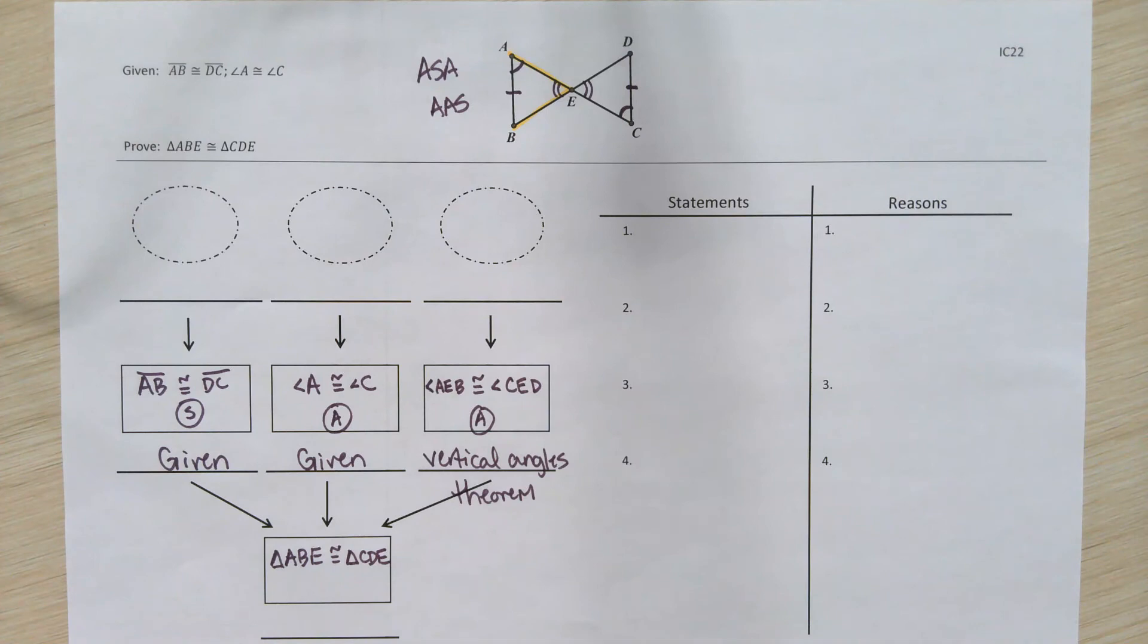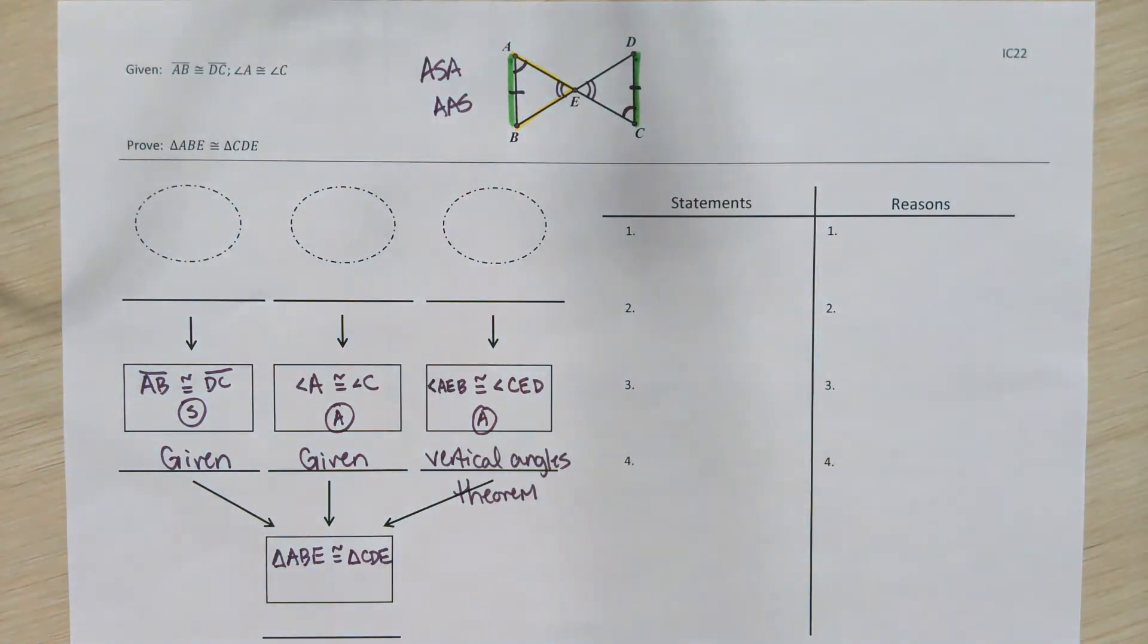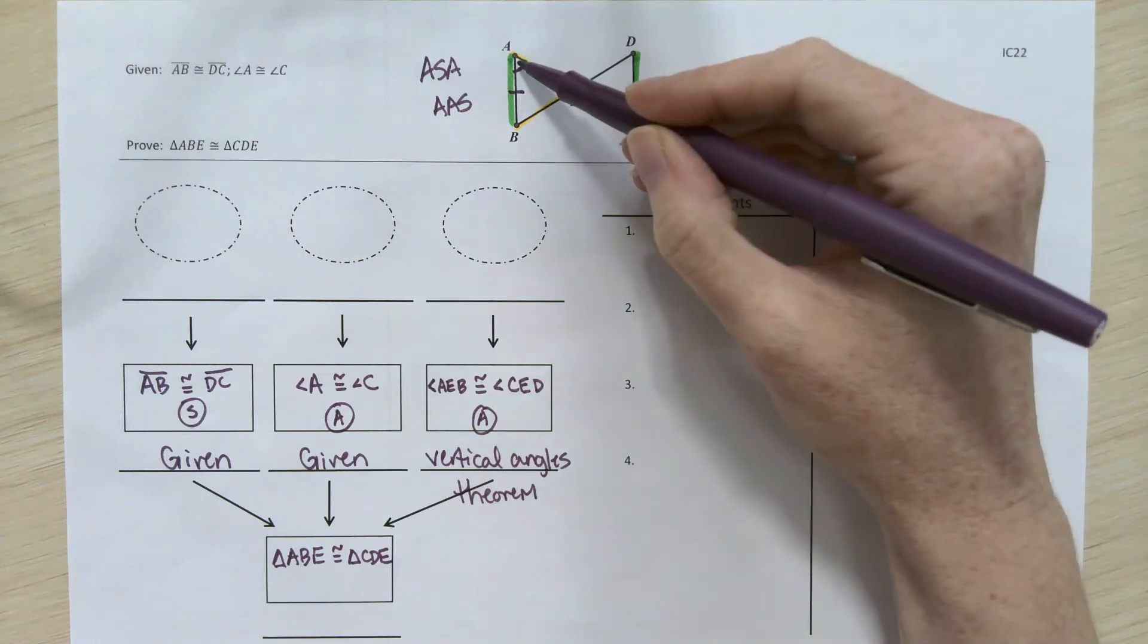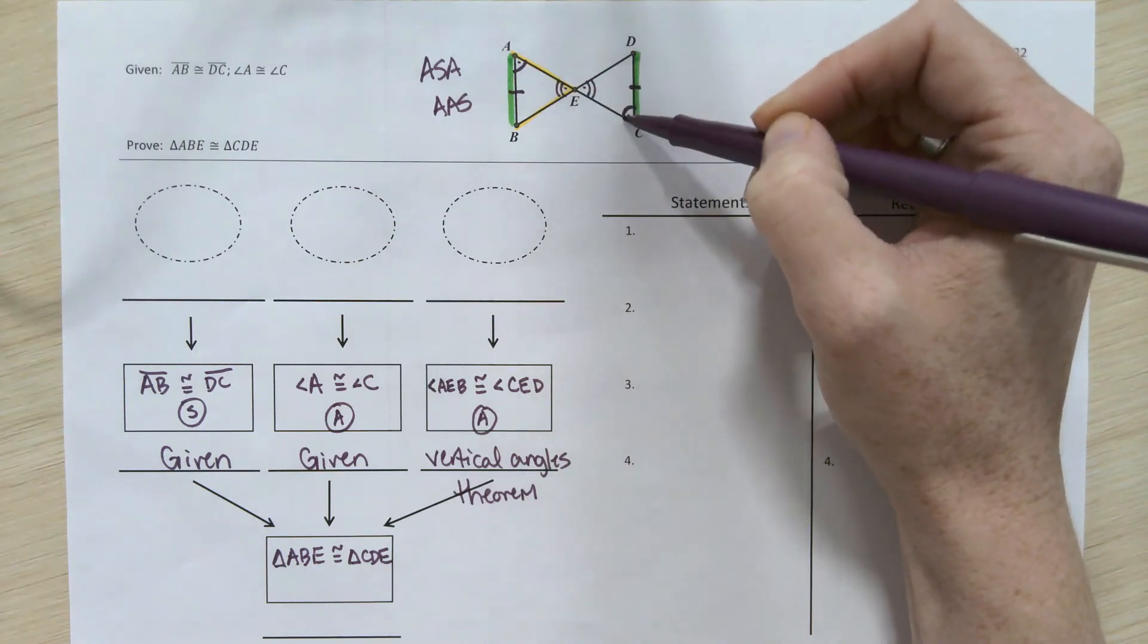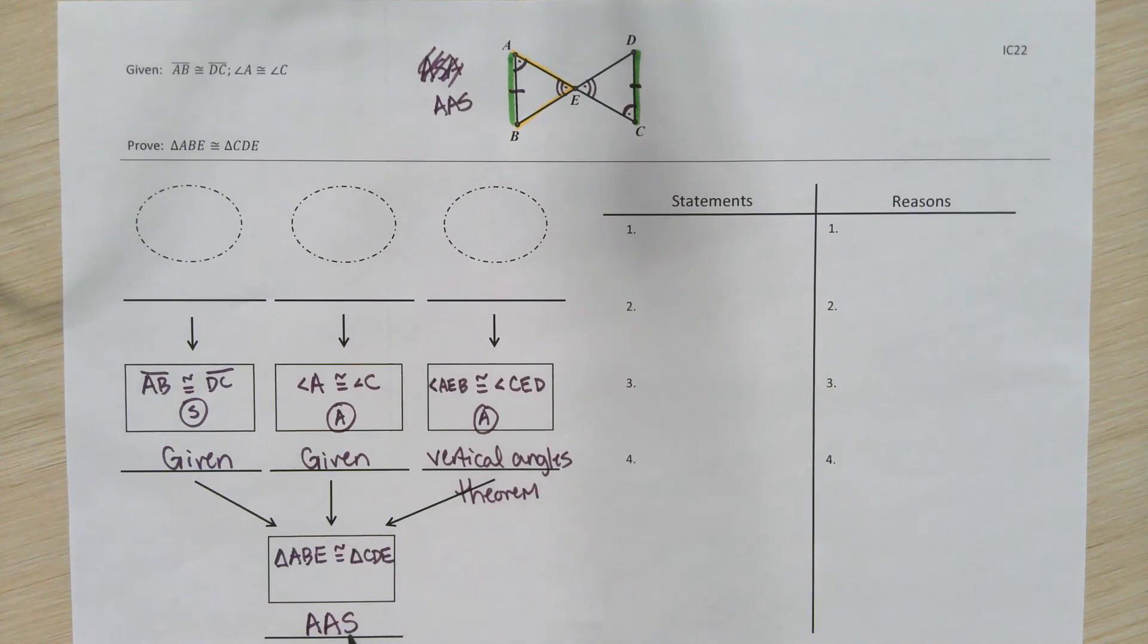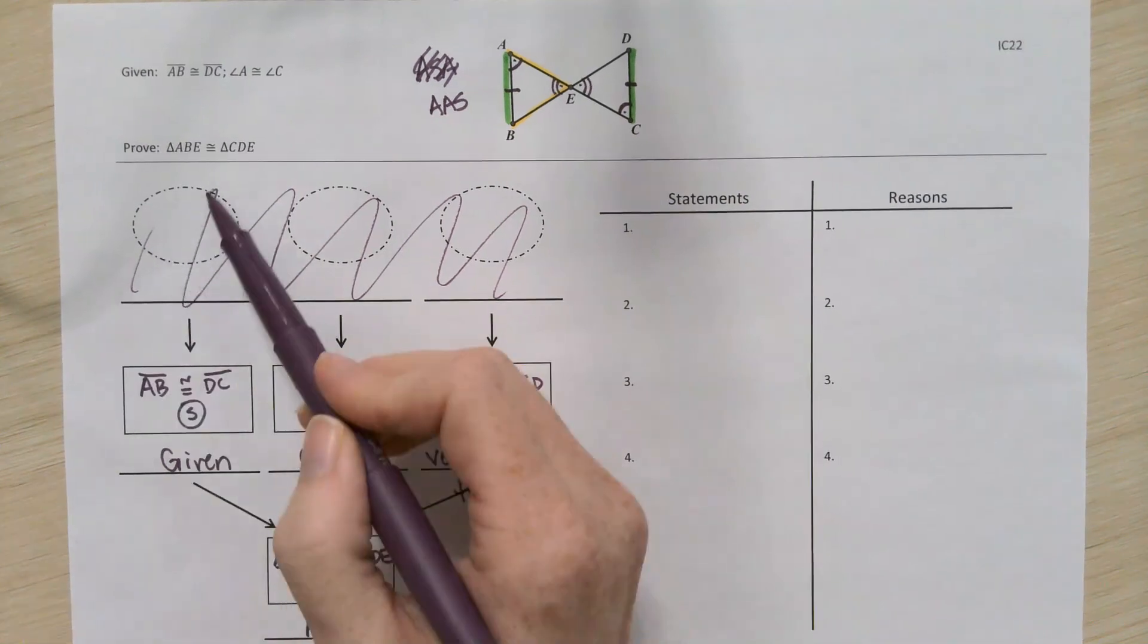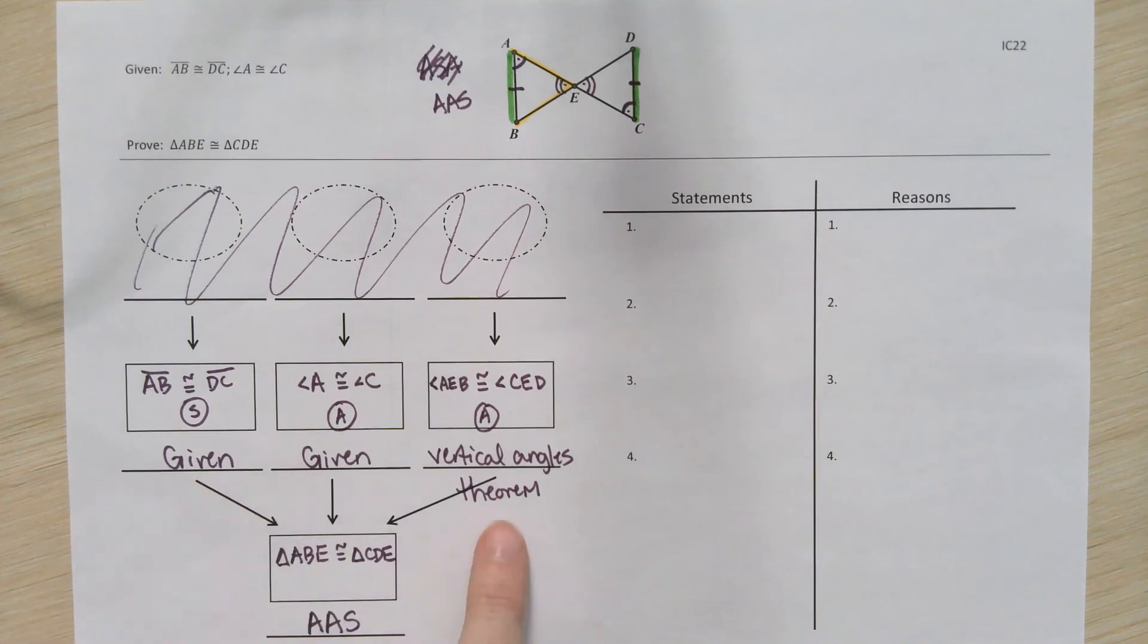So, if we look carefully in that diagram at where our congruent side is located, we need to make a decision about whether that side is connected to both of the congruent angles or only to one. This side is connected to angle A, but not E. This side is connected to angle C, but not E. So, this is an angle angle side situation since that side that's congruent is only connected to one of our congruent angles. So, there was no need for the bubbles in this proof. There were no vocabulary words that we had to turn into congruent statements. There were just congruent sides and angles, either because they were given or because of the vertical angles theorem.